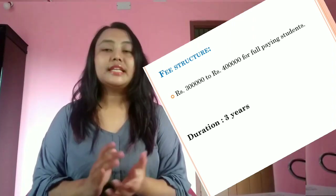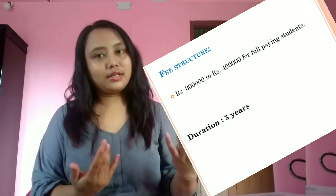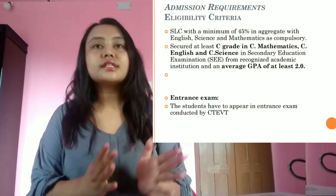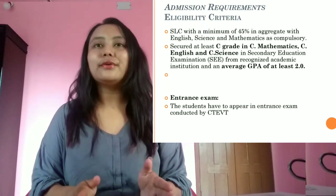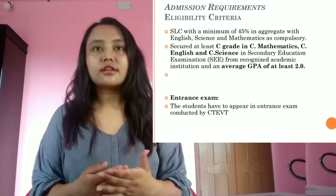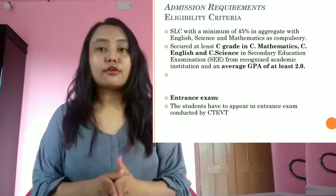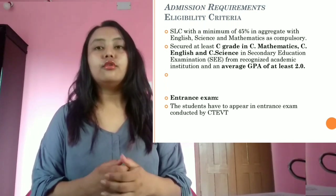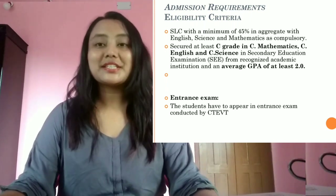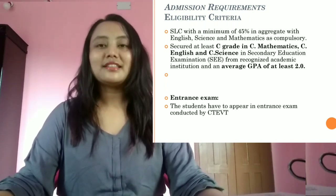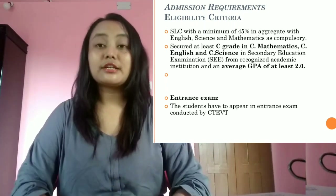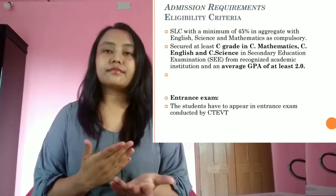To be eligible for the ophthalmic science diploma, you need a minimum 45% in the aggregate, and a C grade in compulsory English, Science, and Mathematics. If you have the required overall GPA, you can apply for the entrance exam under CTEVT. Passing the entrance exam makes you eligible for the Diploma in Ophthalmic Science.